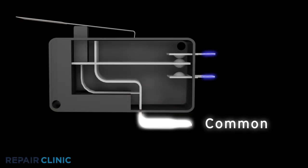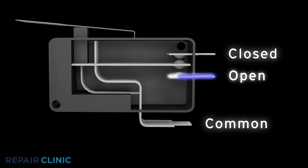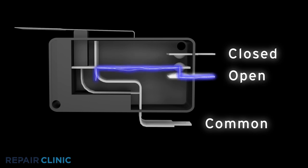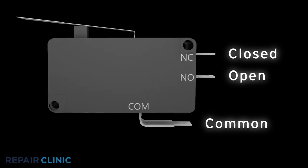Three terminal switches will have a common terminal, a normally closed terminal that provides continuity before the switch is actuated, and a normally open terminal that provides continuity after the switch is actuated. The common terminal is usually designated by the letters COM, the normally closed terminal by the letters NC, and the normally open terminal by the letters NO.